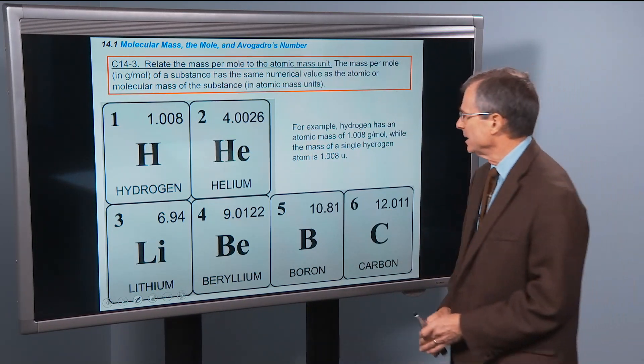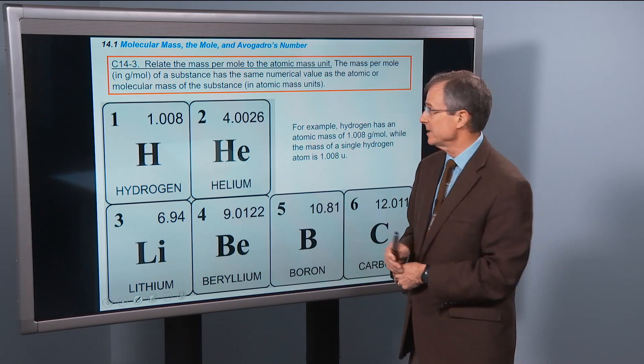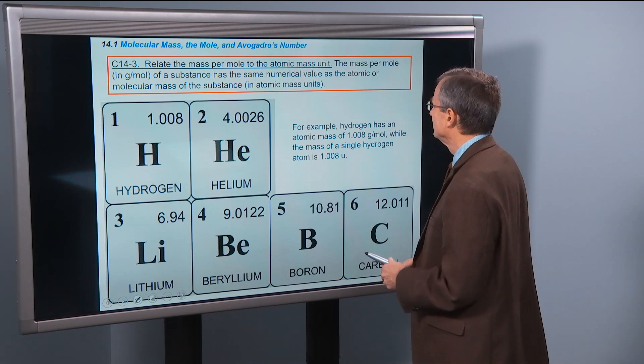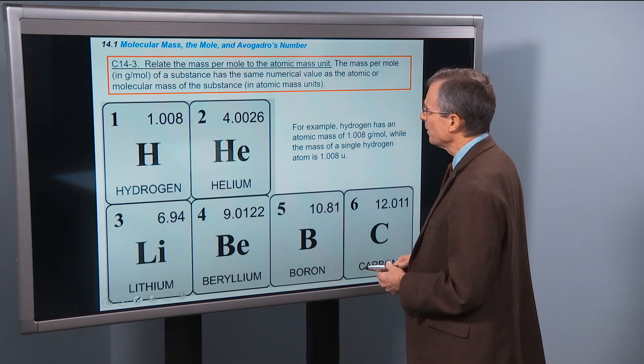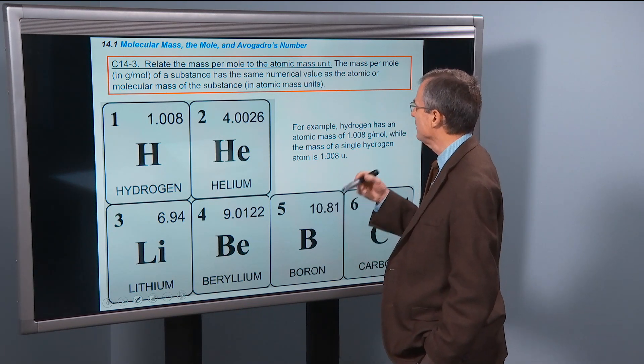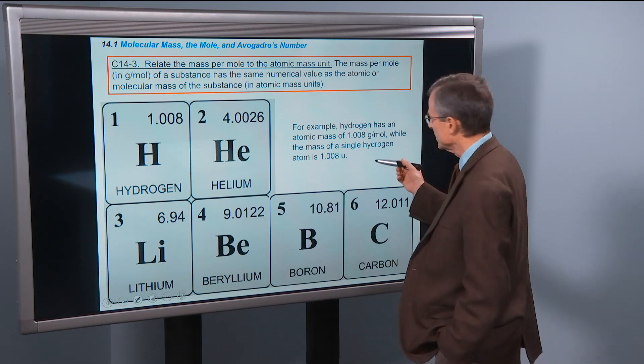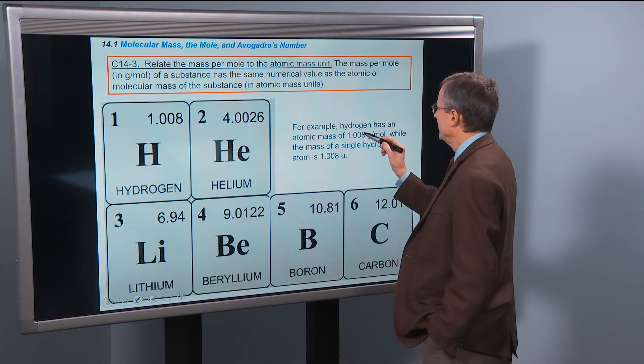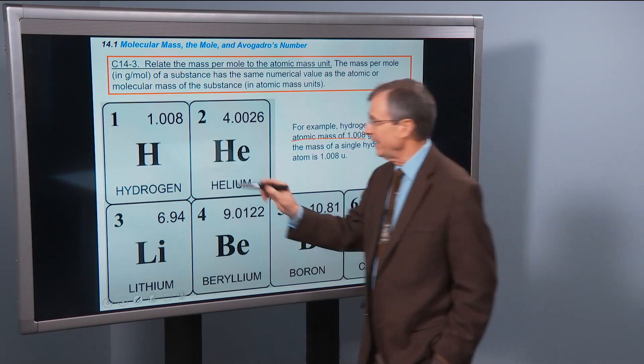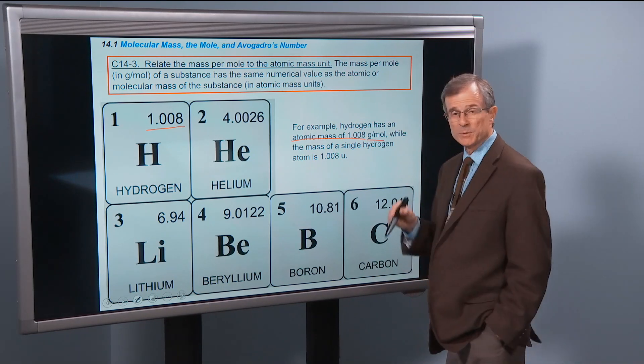This is just codifying what I've just said as a concept. Relate the mass per mole to the atomic mass unit. The mass per mole in grams per mole of a substance has the same numerical value as the atomic or molecular mass of the substance. For example, for hydrogen, it has an atomic mass of 1.008 that you read off the periodic table, and that's the number of grams per mole.